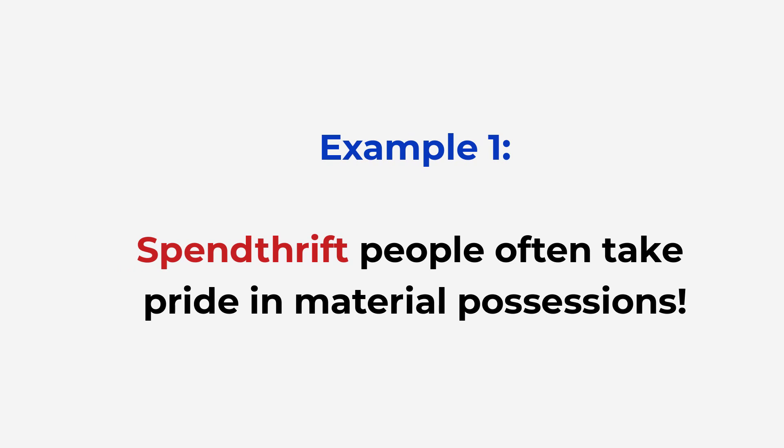Example 1: Spendthrift people often take pride in material possessions. This means people who are spendthrift often take pride in whatever they acquire physically. Physical possessions mein unko interest zyada hota hai — they take pride in that.